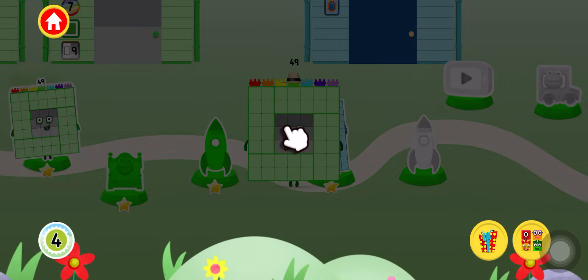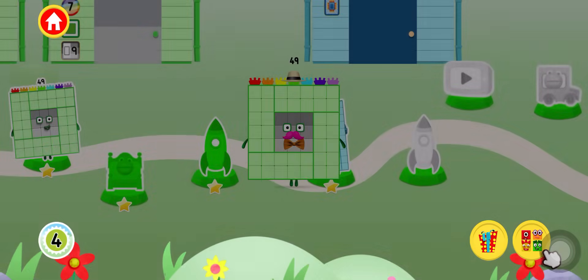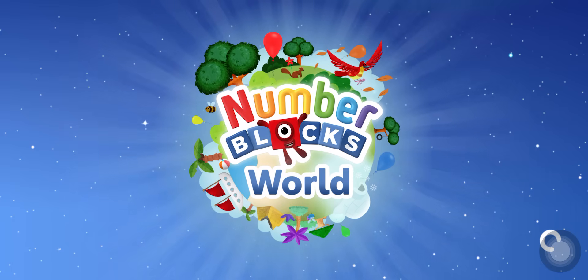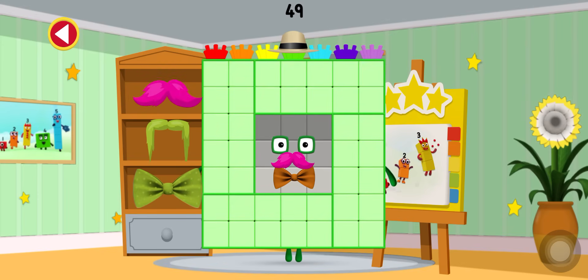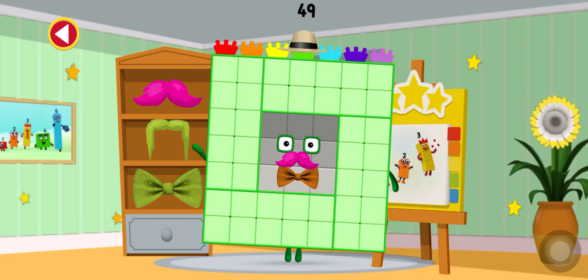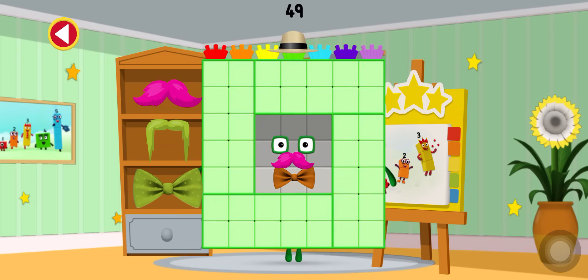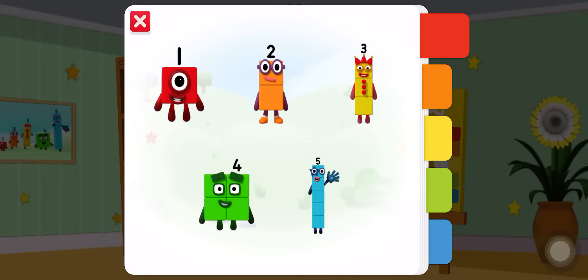You've unlocked a new number block! Tap on the number block button to view the number blocks you've unlocked. Can you dress up this number block? Or tap on the sticker book to see the stickers you've collected. Drag one of the dressing up items from the shelf onto the number block.